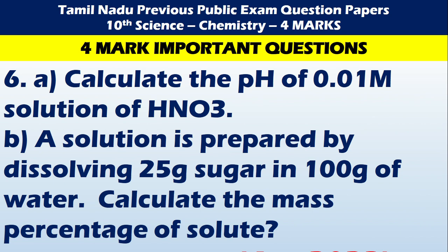The sixth question is: Calculate the pH of a 0.01 M solution of HNO3. The seventh question is: A solution is prepared by dissolving 25 g of sugar in 100 g of water. Calculate the mass percentage of the solute.